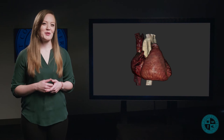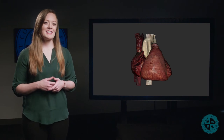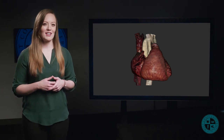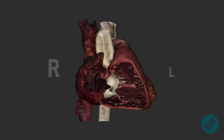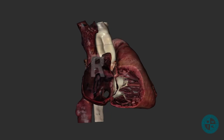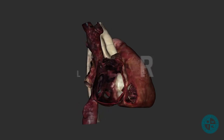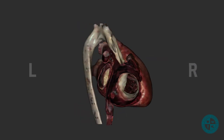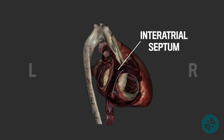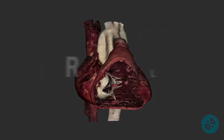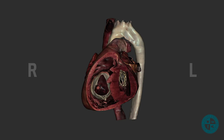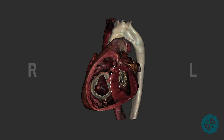The best way to visualize the differences between the right and left sides of the heart is to look at it in cross section. Let's dissect the heart so we can get a coronal cross section. We can see the right side and the left side. The two atria are separated by the interatrial septum, and the two ventricles are separated by the interventricular septum.